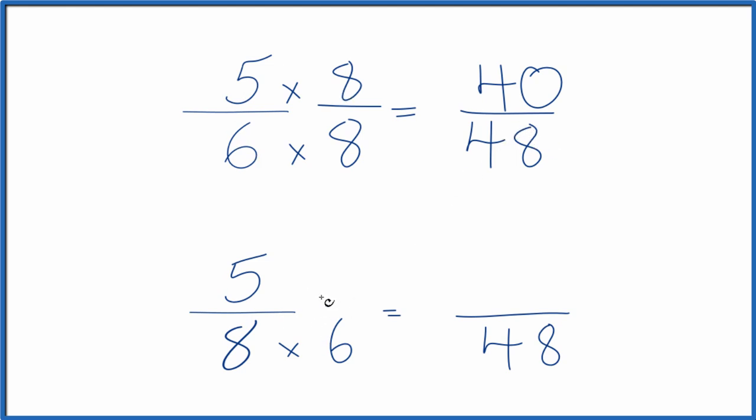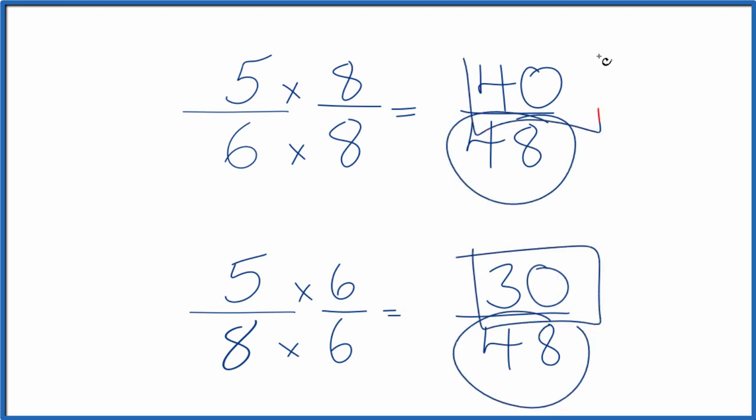Down here, let's multiply times 6, so we have 1 again. 5 times 6 is 30. And now, since we have the same denominator, we can compare the numerators and figure out whether 5/6 is bigger than 5/8.